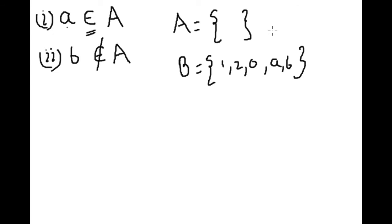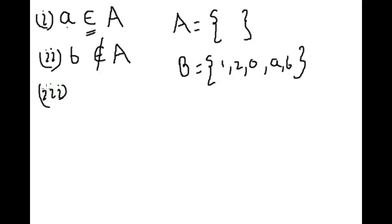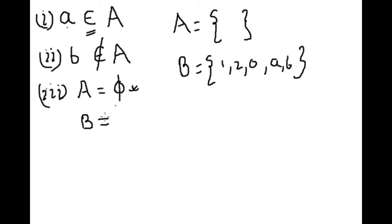For the solution: A is an empty set, so we represent A as ∅ (the empty set symbol). Because B is not an empty set, we represent it as B ≠ ∅.